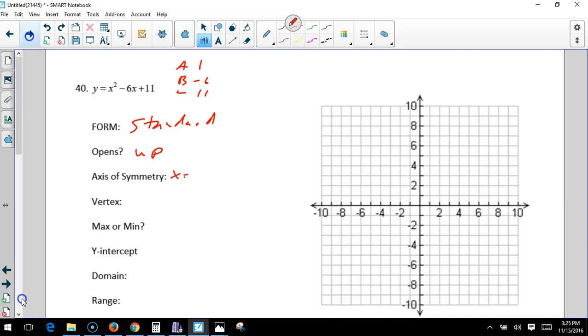The axis of symmetry is the opposite of B over 2A. So that's 6 over 2, which equals 3. I'm going to put that in right now.